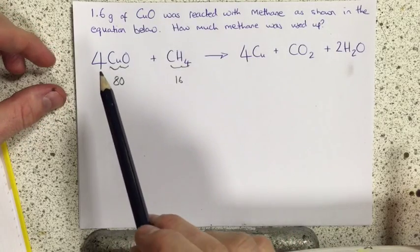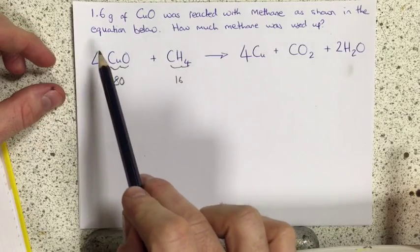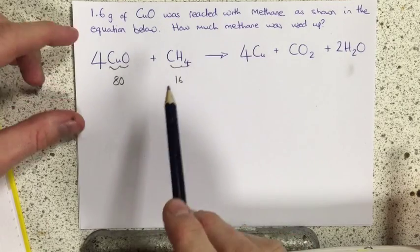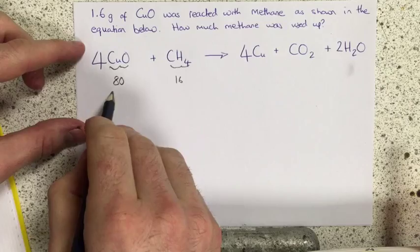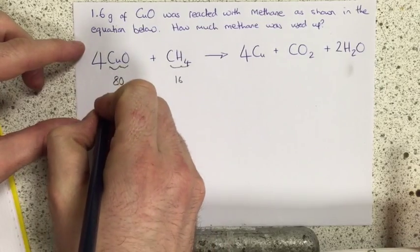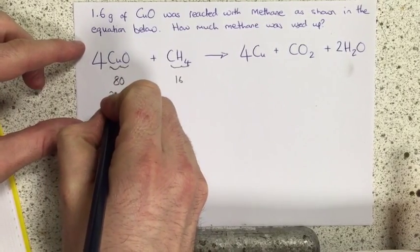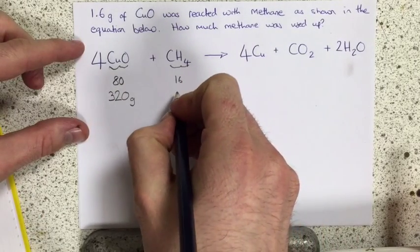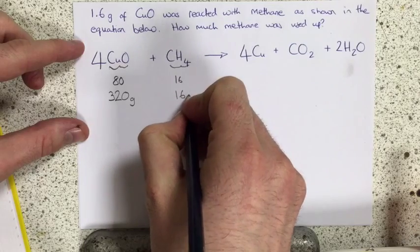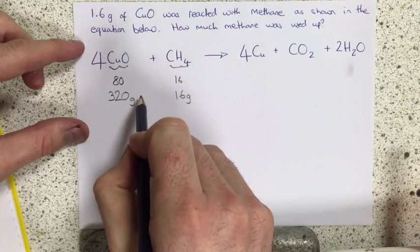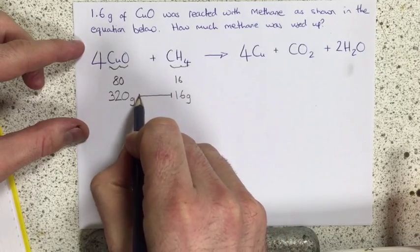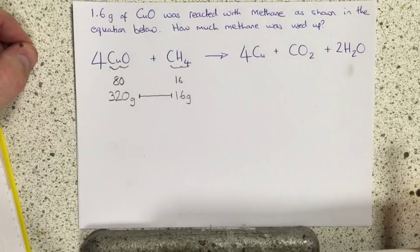However, you can see that actually we need 4 moles of copper oxide to react with our methane. So that means we need 4 times 80, which is 320 grams of copper oxide to react with just 16 grams of methane. So we now know what the ratio is of the masses.